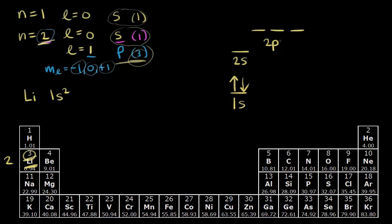For lithium, we've taken care of two of its three electrons. Its third electron has to go into the next highest orbital in terms of energy — the two s orbital. Energy increases as we go up. So lithium's next electron must go into the two s orbital. Therefore, lithium's electron configuration is one s two, two s one — meaning one electron in an s orbital in the second energy level.